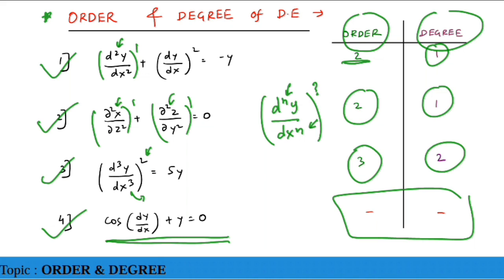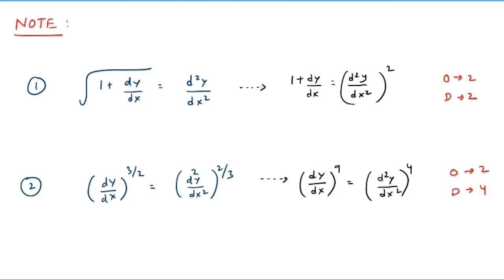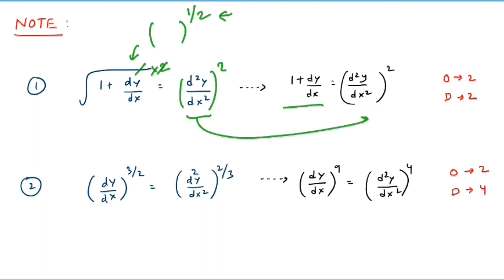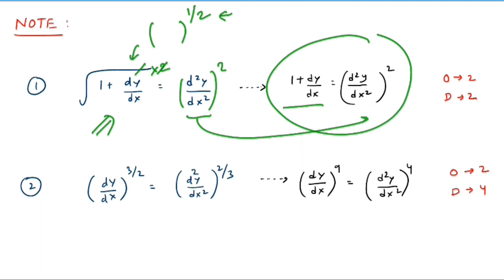Important note: when the power of a derivative term contains a fraction such as raised to 1/2, you must eliminate the radical before commenting on order and degree. Take squares on both sides — the 1/2 and the square cancel. After squaring, you get a clean equation free from radicals. Now the highest n gives order = 2 and the power gives degree = 2.